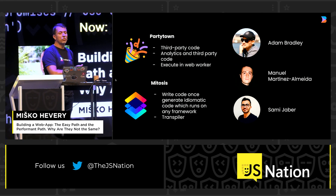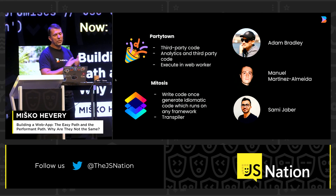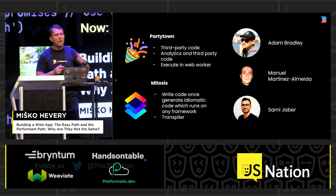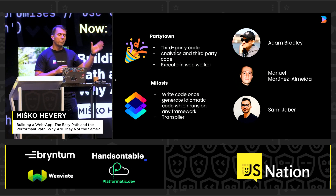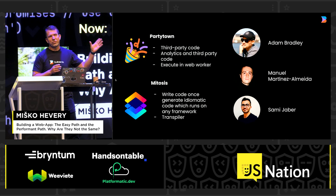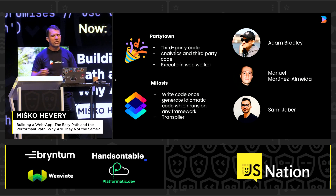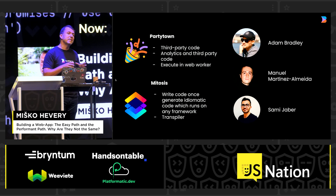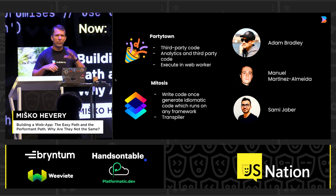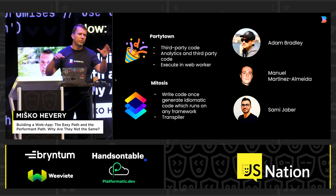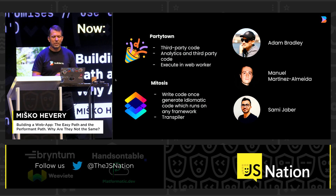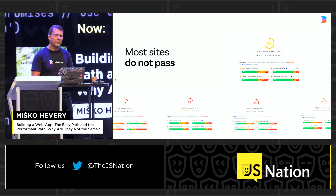We do other things too. We do Qwik, but we also have this thing called PartyTown which moves third-party code into WebWorkers, and we do Mitosis which allows you to write your code once and we generate canonical code for React, Angular, Vue, Svelte, and anything else that you can possibly imagine.